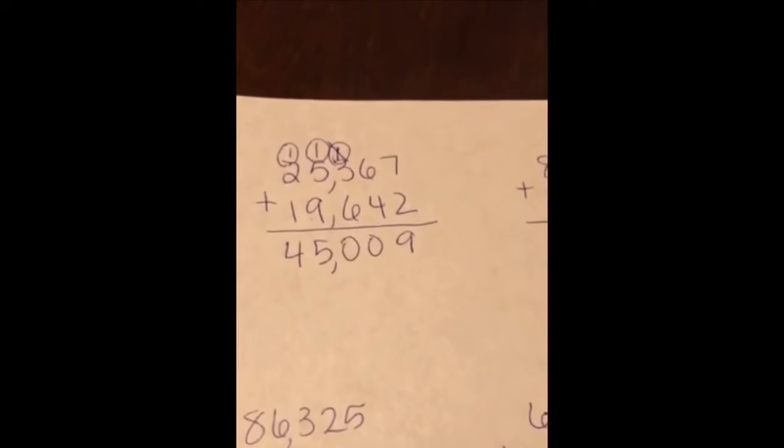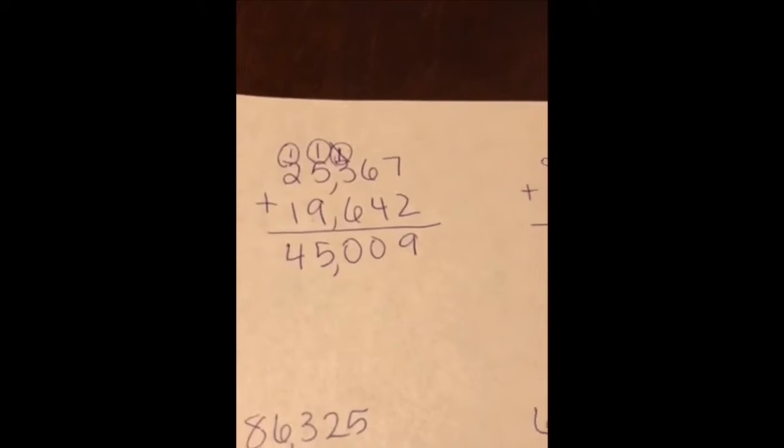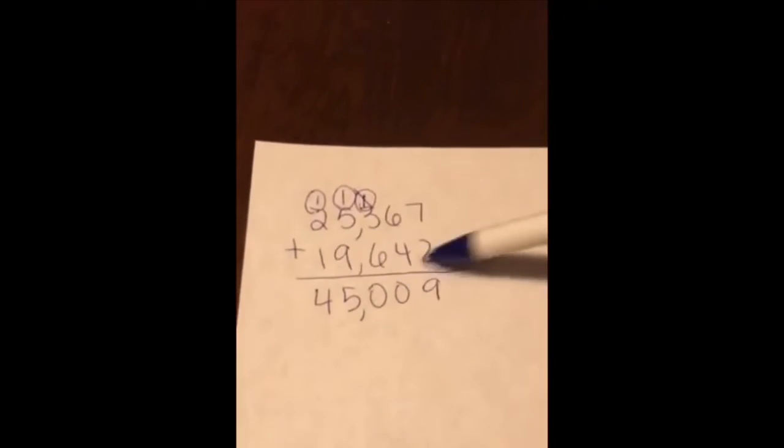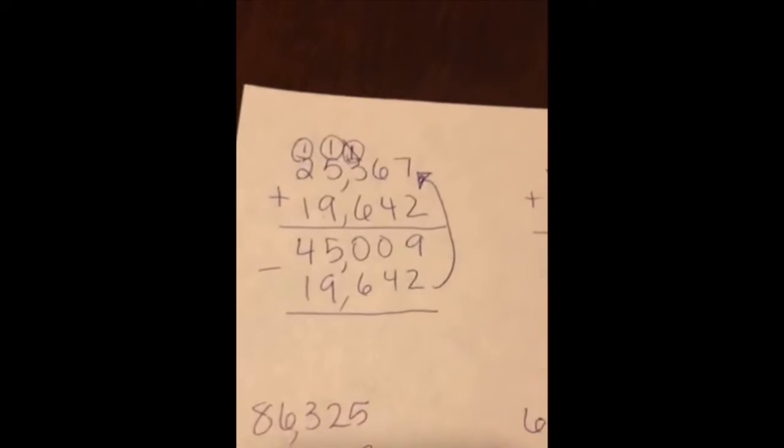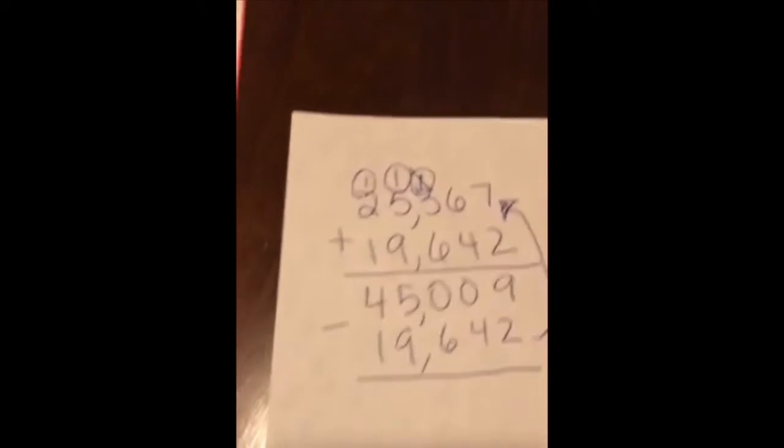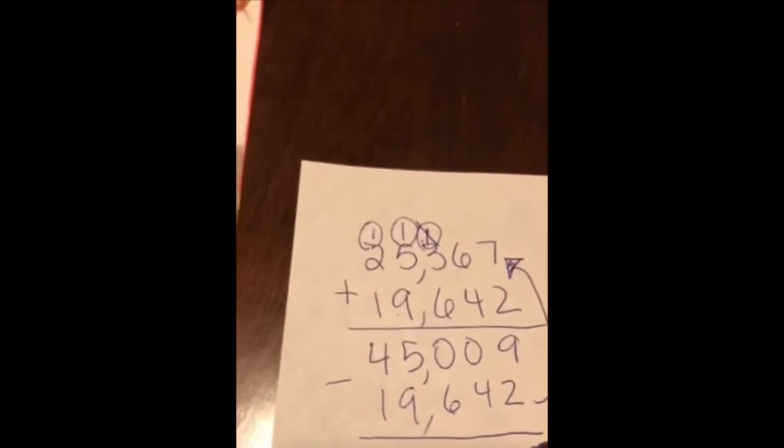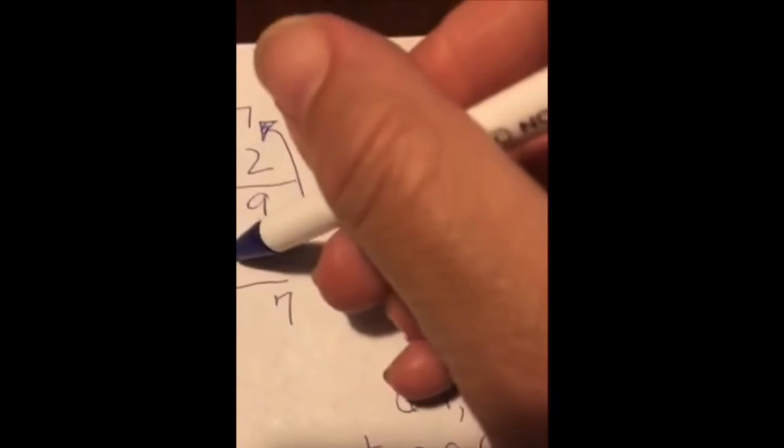What I'm going to do is subtract the bottom number, which is 19,642, which should give me my original number on top. So I have nine minus two is seven. I cannot take four from zero and I also cannot take six from zero. I go to that thousands place. That five thousand becomes four thousand. We have a nine in the hundreds place.